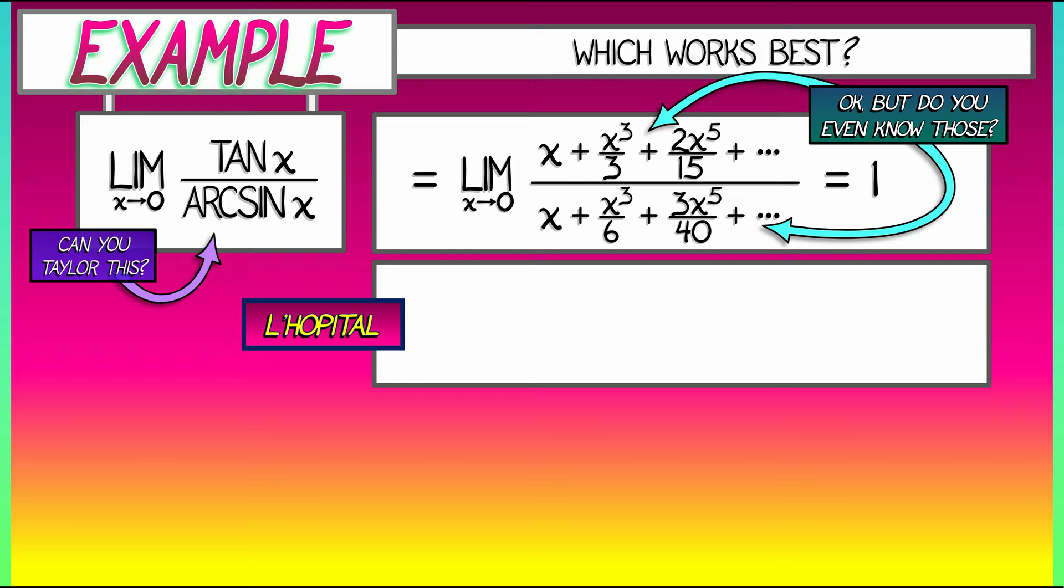So, let's do L'Hopital's. Let's take the limit as x goes to zero of what? The derivative of tangent is secant squared. The derivative of arcsine is one over square root of one minus x squared. Quantity one minus x squared to the negative one half power. I can evaluate both of these at zero and I get, of course, one, giving me the same answer one over one is one.